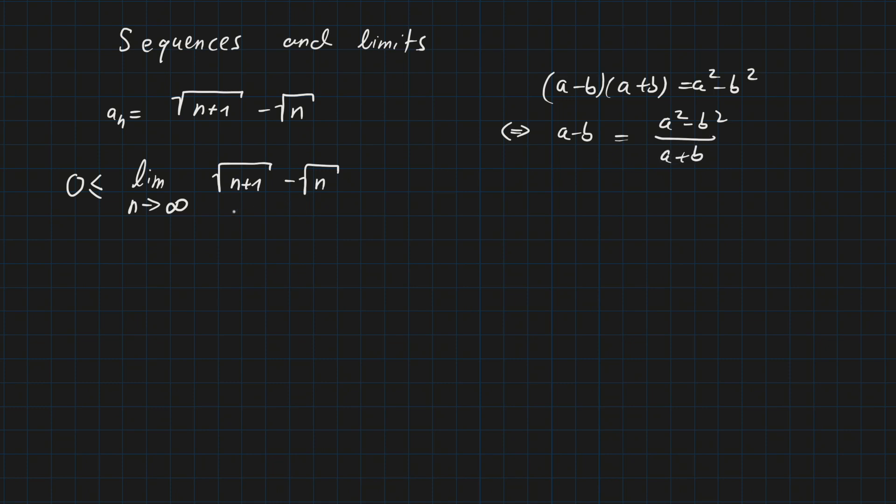The first term represents a, the second term represents b. So we can reformulate this to square root of n plus 1 squared minus square root of n squared...